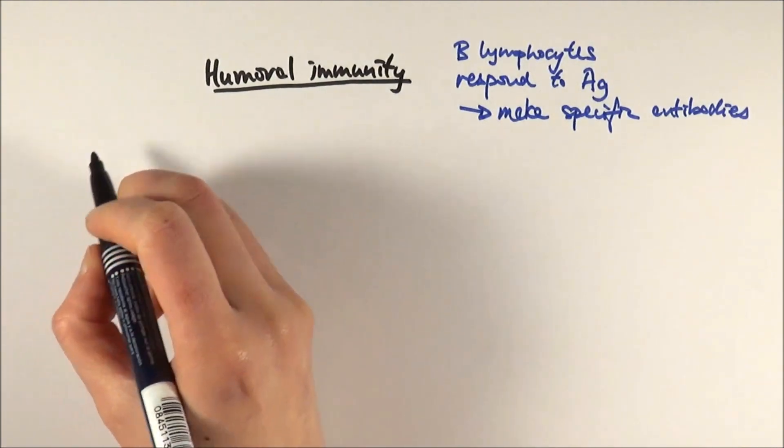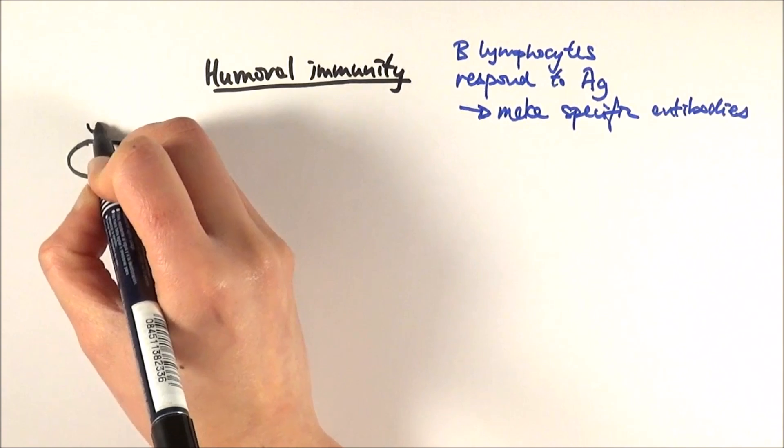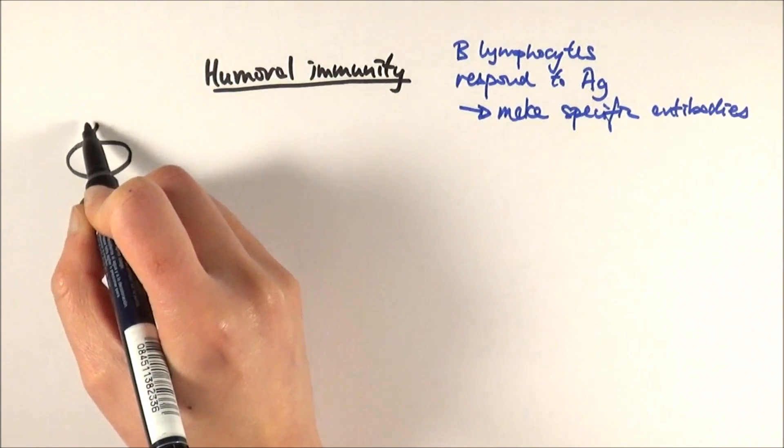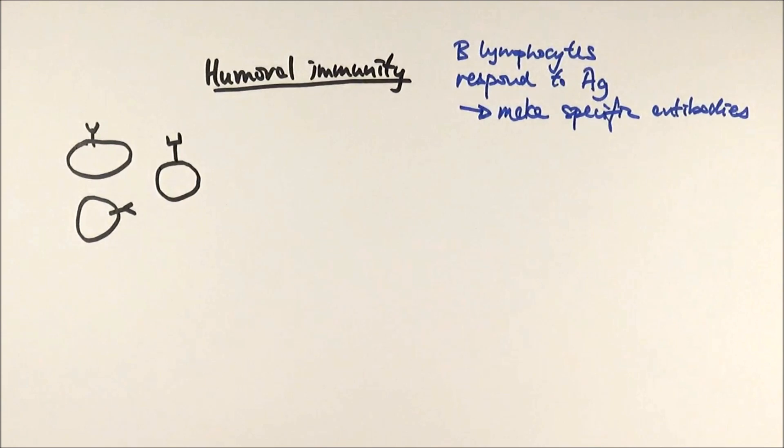So in the beginning we've got lots and lots of B lymphocytes and each of these B lymphocytes have slightly different antibodies on the surface already. For example, we can have a sort of round shape one, a V shape one, or even a square shape antibody as well.